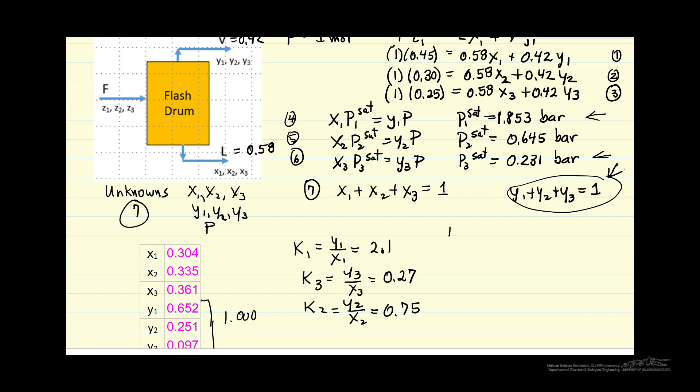So the left side adds to 1, the right side, and I'll pause and write this down. And so this says 1 equals 0.58 because one of our equations, number 7, says that the X is add to 1.